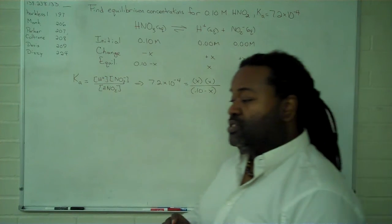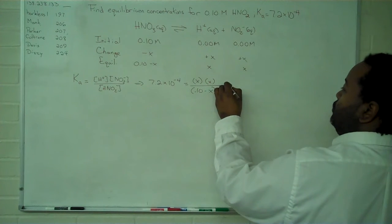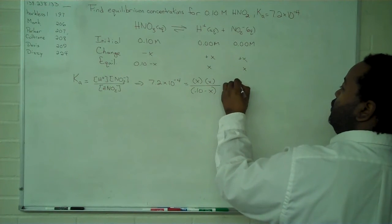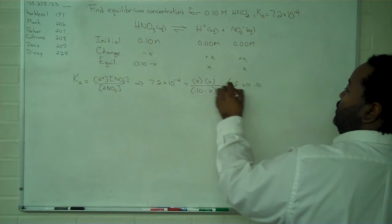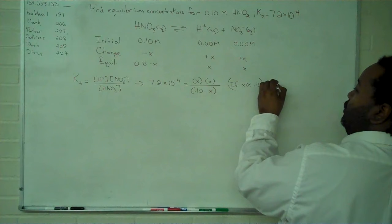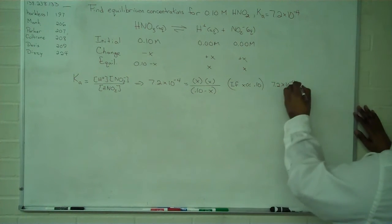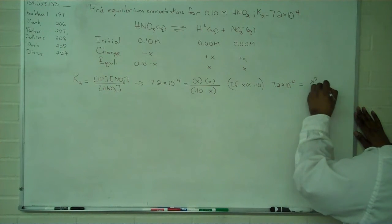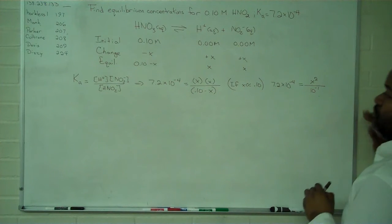we can use the approximation method. So if x is very small relative to 0.10, then this becomes 7.2 times 10 to the negative 4 equals x squared over 0.1, which is just 10 to the minus 1.